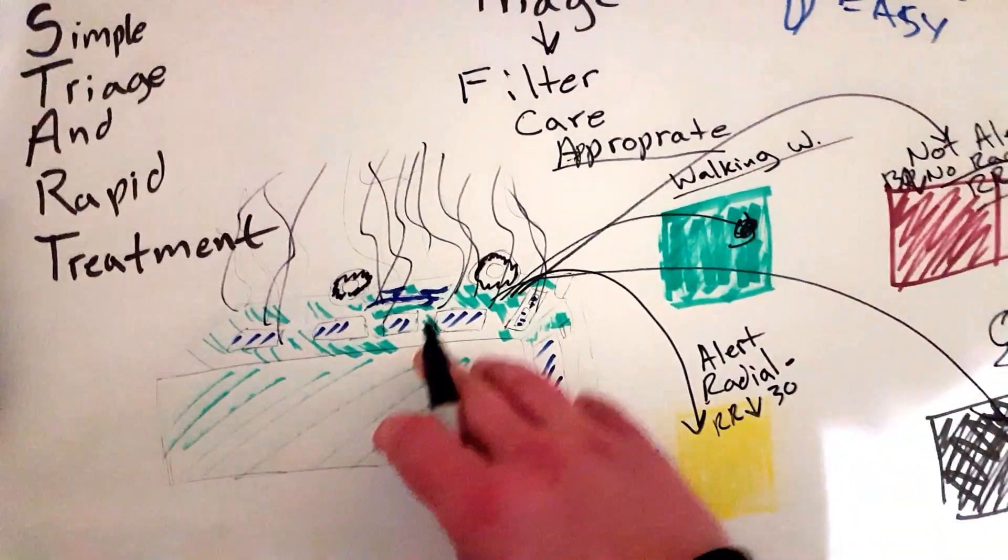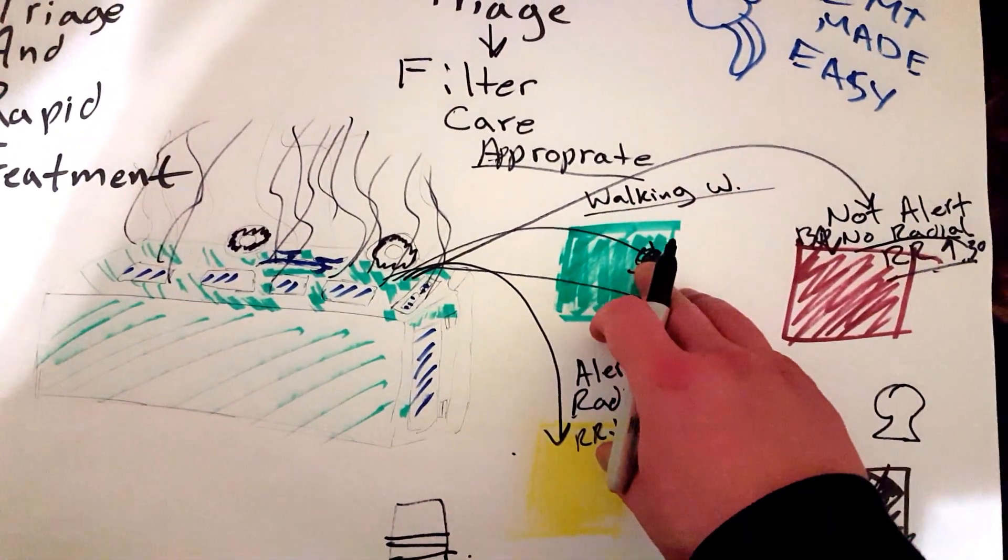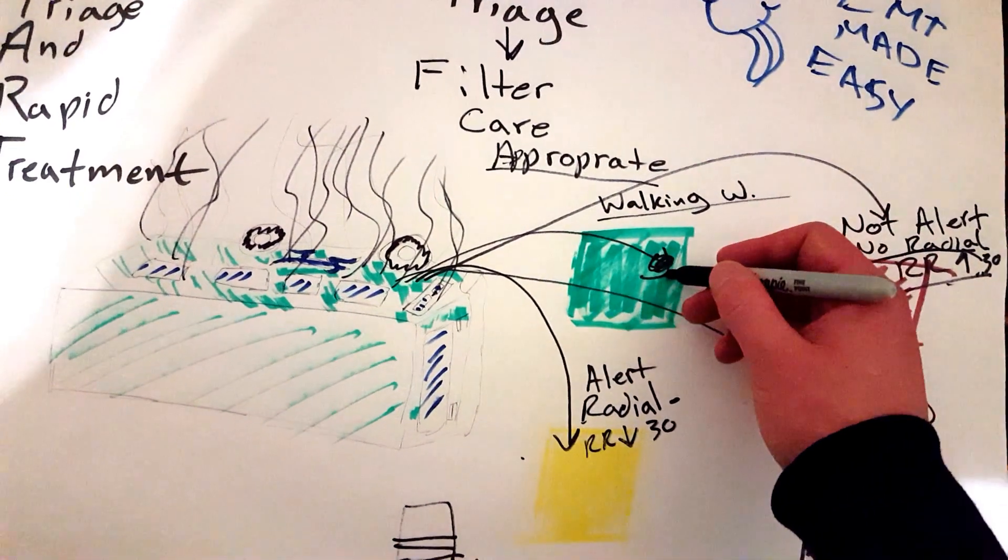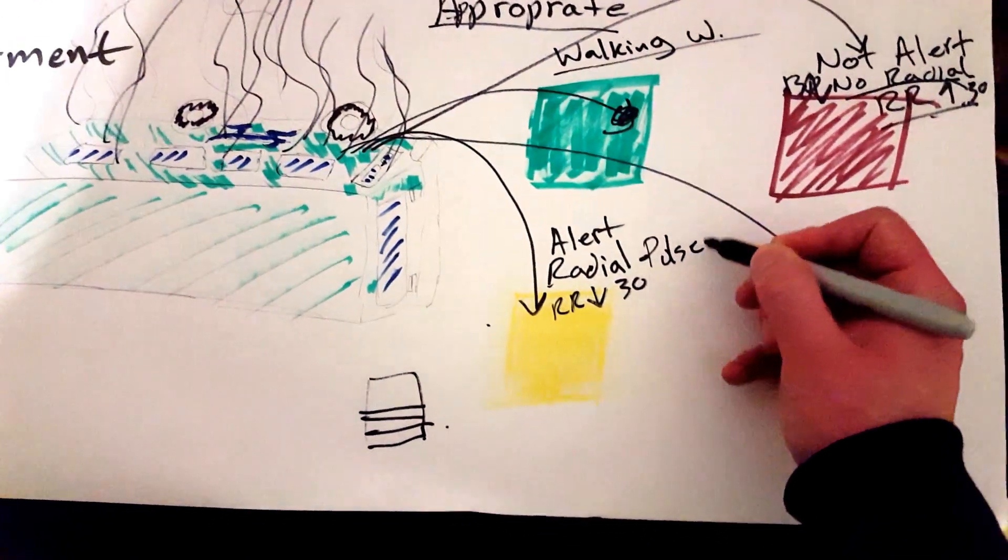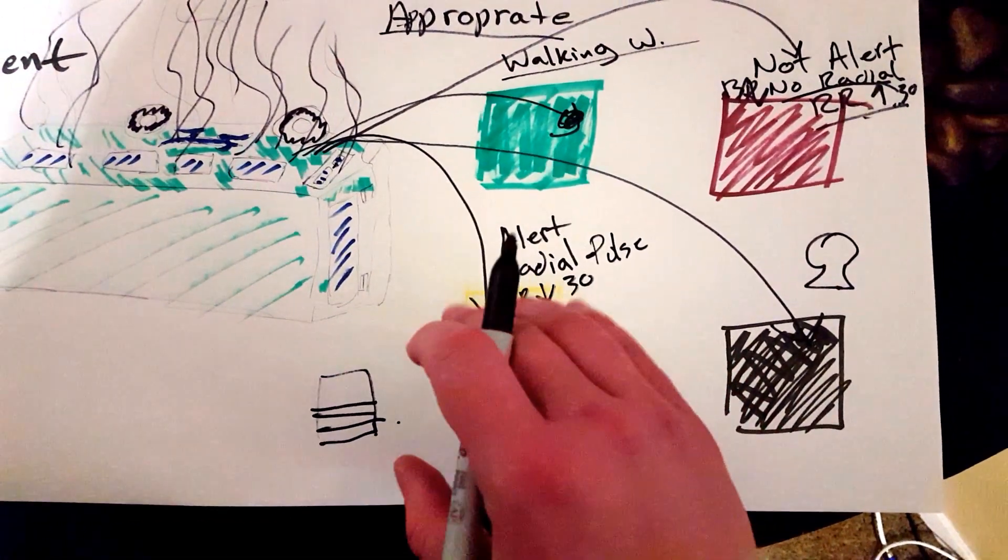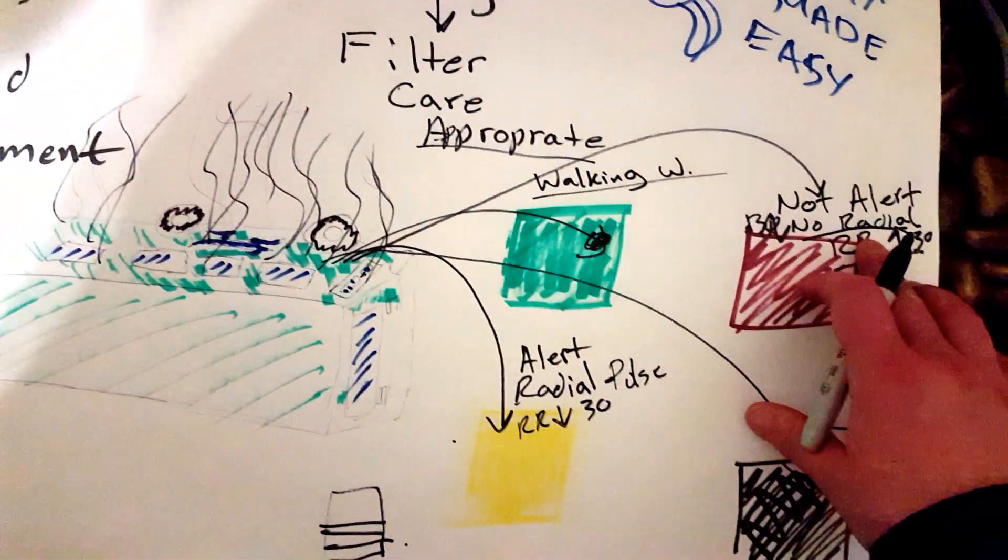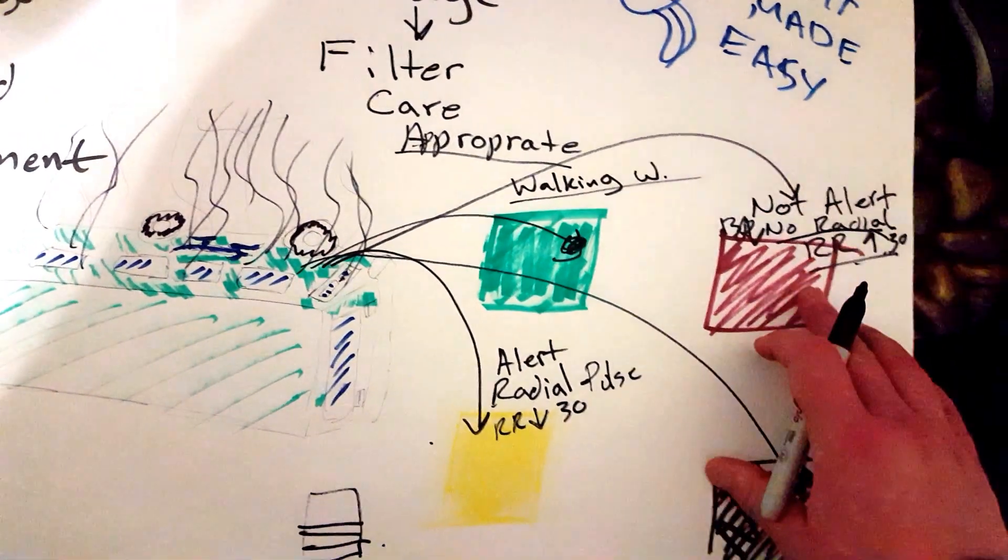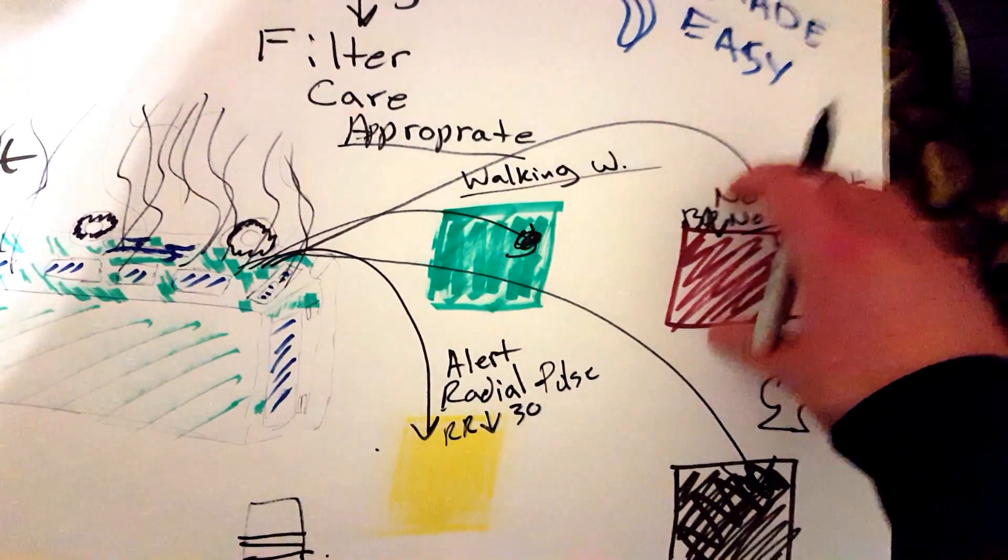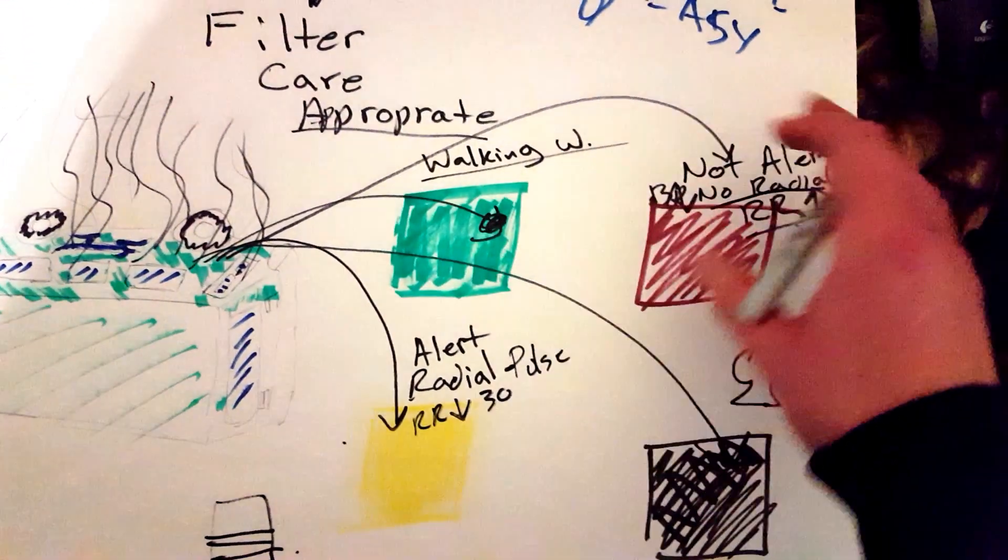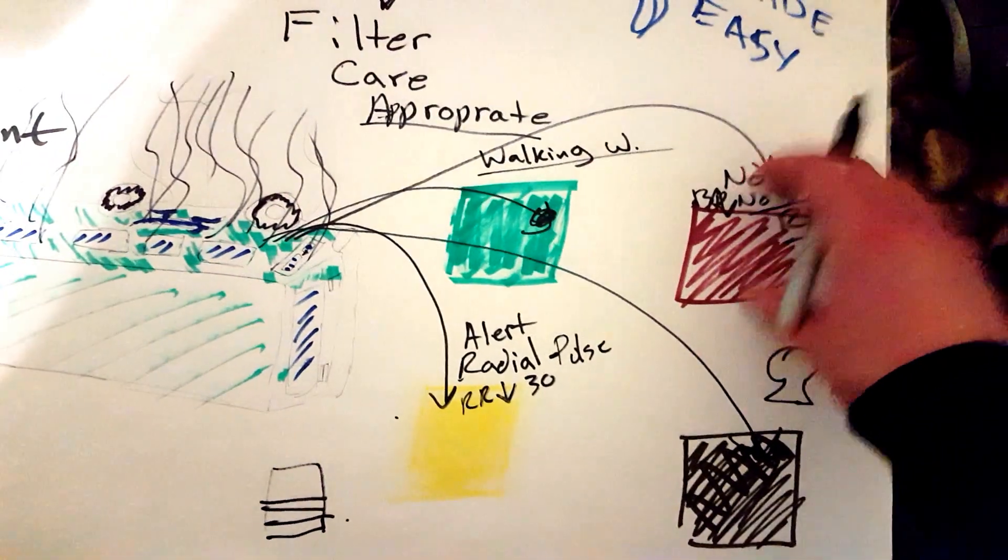As you're walking into the bus, say 'If you can hear the sound of my voice, walk to me.' They're the walking wounded, most likely they'll be okay, they get a green. If they are alert, have a radial pulse, respirations below 30, they get a yellow. If they have no radial pulse, not alert, and respirations above 30, this tells me they're compensating and they might be dying soon if they don't get help ASAP. If you can do a quick fix, put a tourniquet on them, open the airway, go ahead and do it, but they need help ASAP.